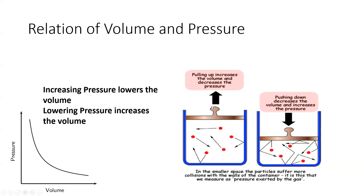Now, regarding pressure and volume: when pressure decreases, gas particles move more and expansion starts — so volume increases. When you increase the pressure, the gas is compressed and volume decreases. Pressure and volume are inversely related to one another. When pressure increases, volume decreases, and vice versa.